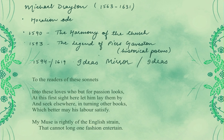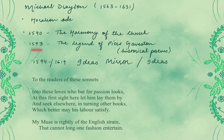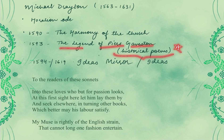Now let's look at Drayton's first book: in 1590, 'The Harmony of the Church.' Then in 1593, 'The Legend of Piers Gaveston,' which contained historical poems. The important fact to remember about Michael Drayton is that he wrote historical poems — this is one of his defining and important features.